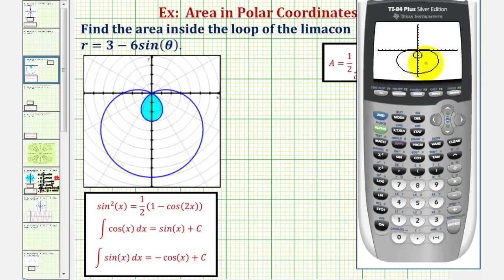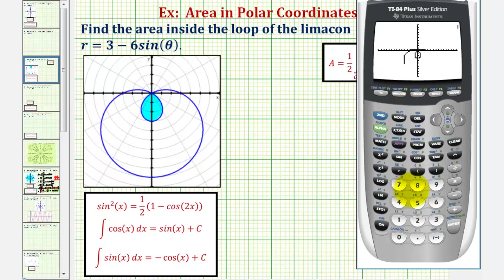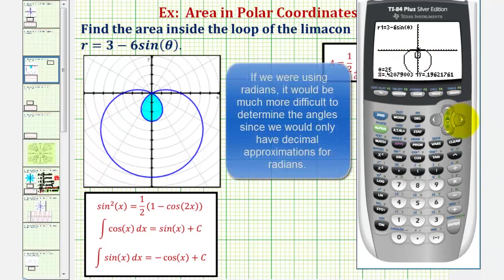Here we have a good graph of our curve. Square the window by pressing zoom option 5 for z-square. Press the trace key. Notice that when theta is zero degrees, we'd be at the point (3, 0). We want to determine on which interval we trace the inner loop, so press the right arrow. When theta is 30 degrees, or pi over six radians, we're at the pole.